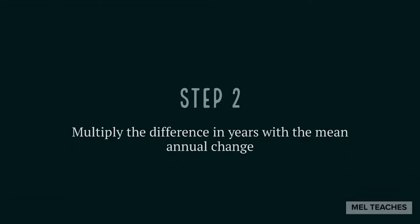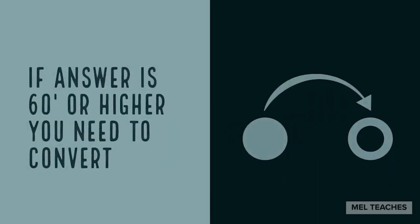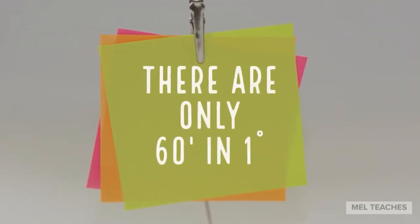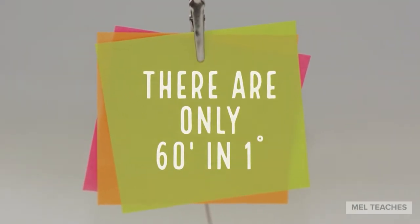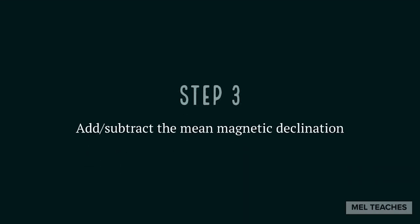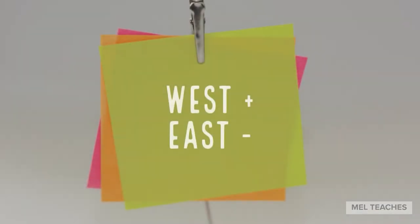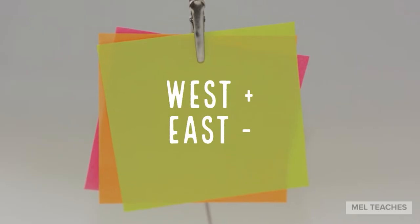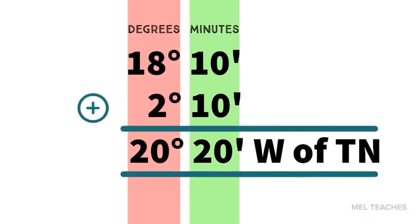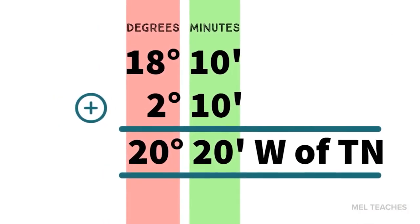Step number two: multiply the difference in years with the mean annual change. If this gives you an answer of 60 minutes or higher, then you need to convert — remember there are only 60 minutes in one degree. Step three: add the mean magnetic declination if it is west, and subtract if it is east. It is easiest to keep your degrees and minutes lined up.